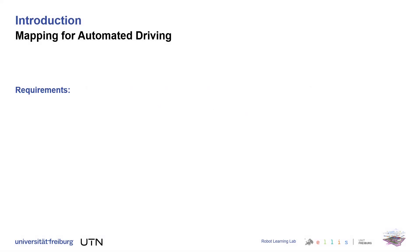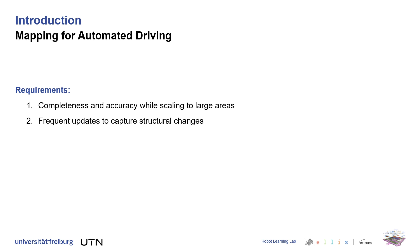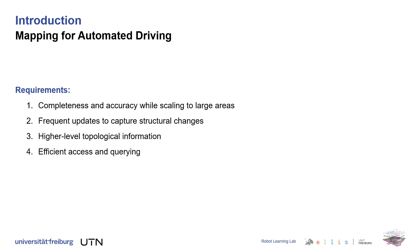Recent autonomy systems leverage high-definition maps for several downstream tasks. Ideally, these maps should fulfill the following requirements: completeness and accuracy in large-scale areas, frequent map updates to capture structural changes, and higher-level topological information with efficient access and information querying.